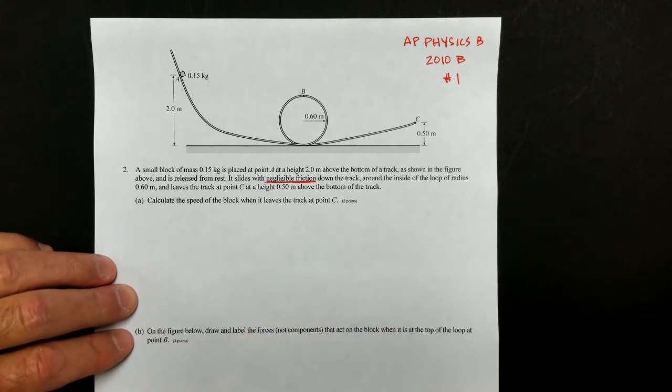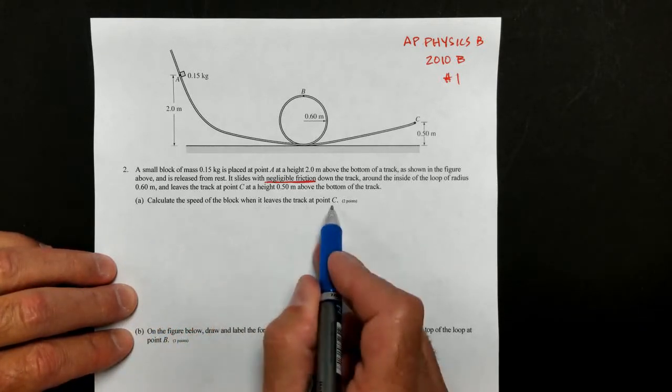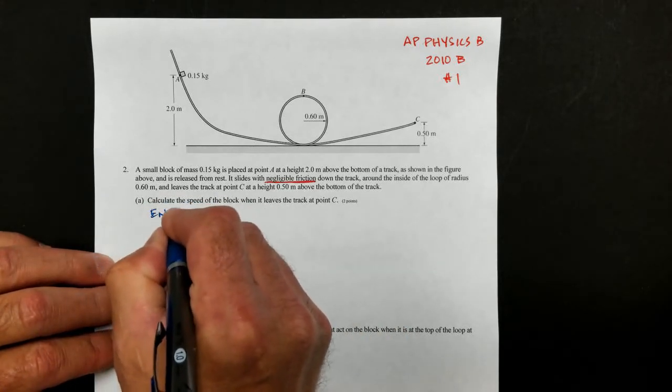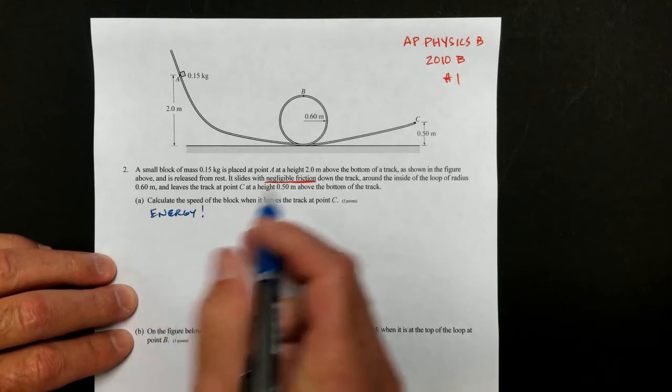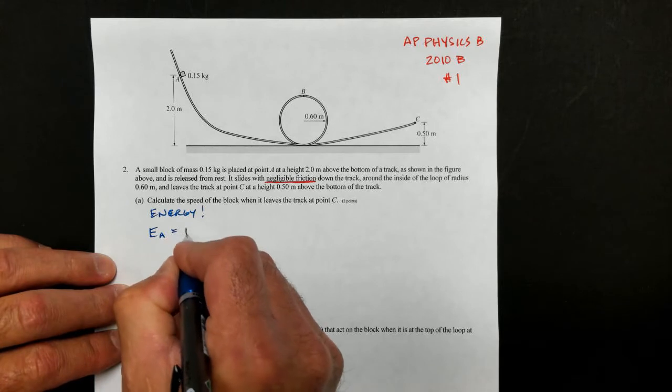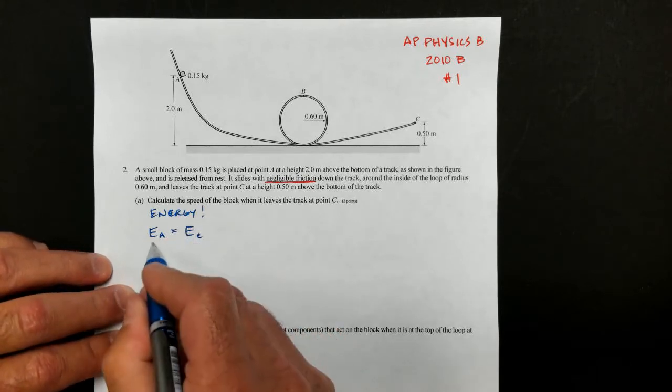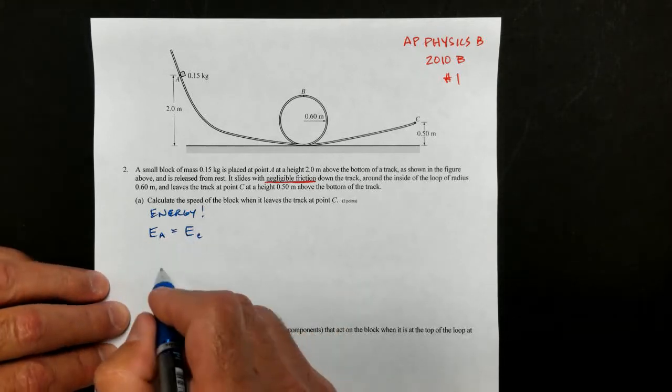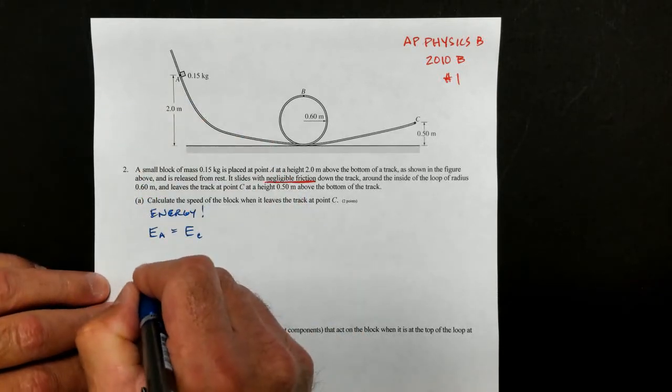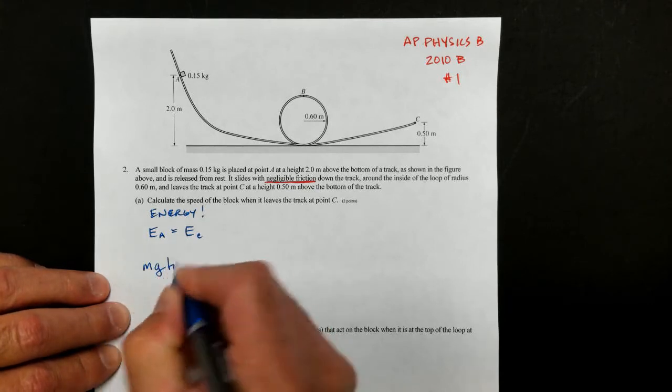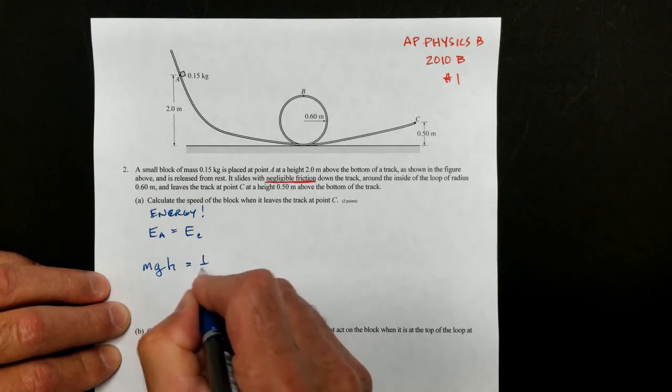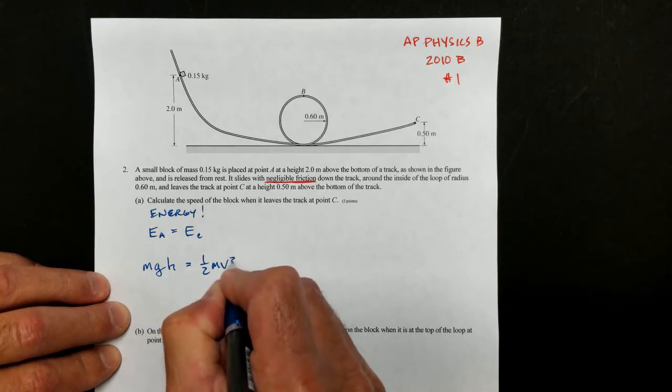So the first thing we want to think about when they're talking about the speed of the block when it leaves at point C, we're probably going to talk about energy. And conservation of energy, because there is no friction, we can say that the energy at point A equals the energy at point C. You could say energy initial equals energy final, but labeling it with the locations is probably a good idea. Now, what kind of energy does it have here at point A? Well, we have mgh, and that is where we start out, and that's going to equal one half mv squared at point C.